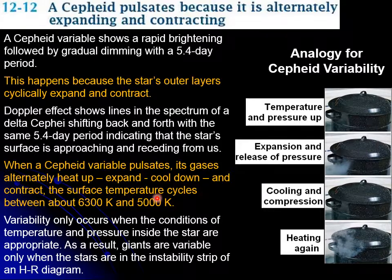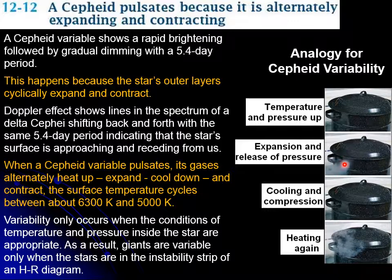Because of this, we know the temperature oscillates between certain ranges, and this occurs only under conditions defined by the instability strip. A good analogy is boiling water in a pan: you heat it until the vapor pressure is so high it lifts the lid and releases gas — it expands and releases. Then it cools down, compresses again, and the whole process repeats, similar to what happens in the outer layers of a variable star.